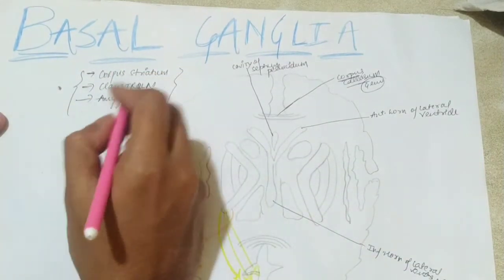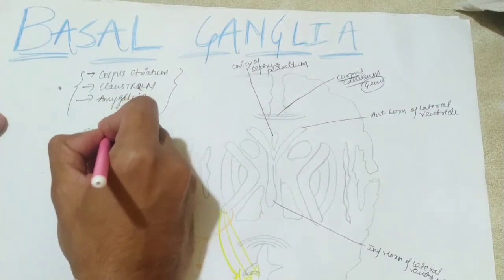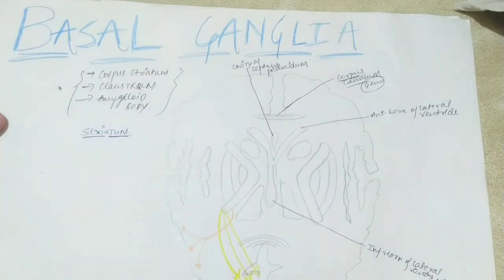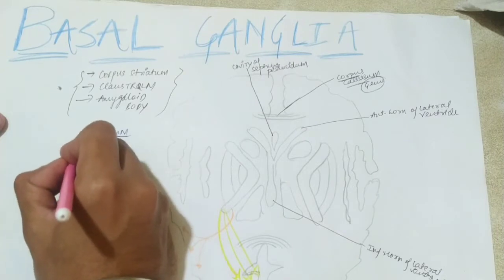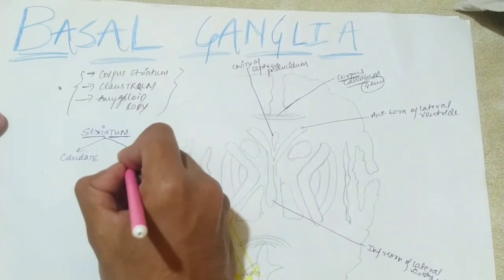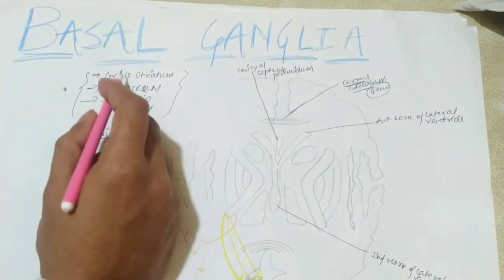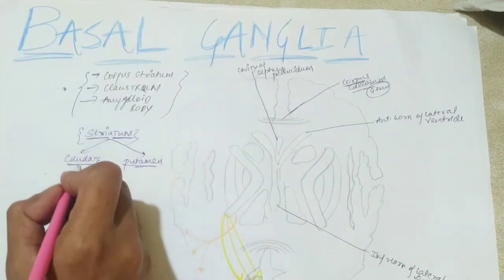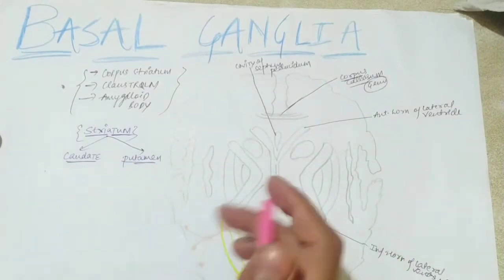Corpus striatum — just divide it into the striatum part. The striatum part actually includes your caudate nucleus and your putamen. So just remember: exclude the word corpus and consider just the striatum — striatum includes your caudate and putamen. Let's see where these two structures are present.